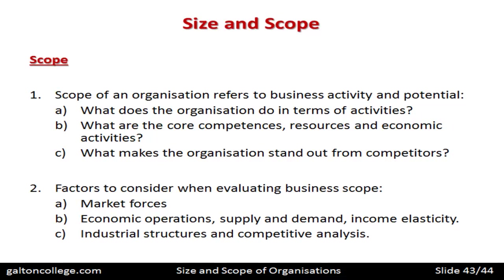Industrial structures and competitive analysis relate to the degree of competition. It involves looking at what competitors are doing in terms of innovation, location, pricing, staff, and performance over the last year — spotting weaknesses in competitors so strategies can be designed to exploit them. Companies must work out how they can improve their market position, whether by offering additional services to win customer loyalty, or by increasing the scope of their activity.